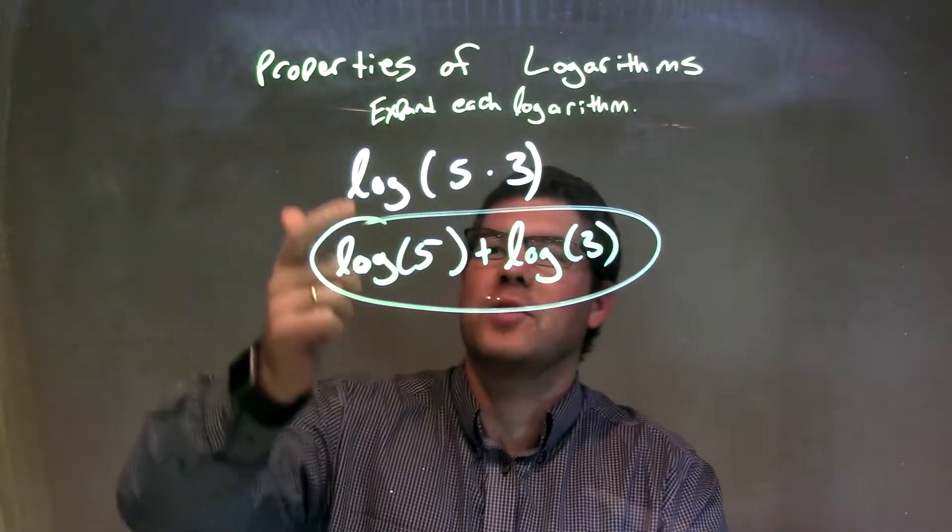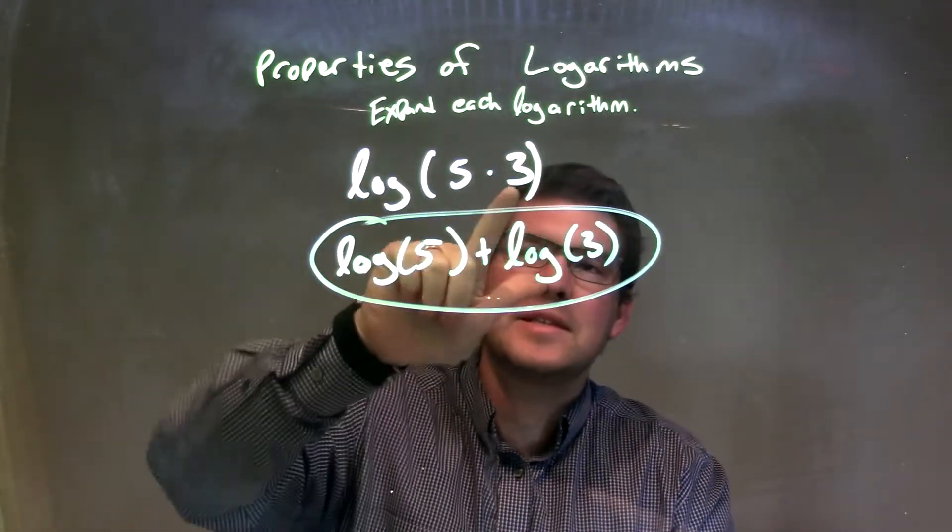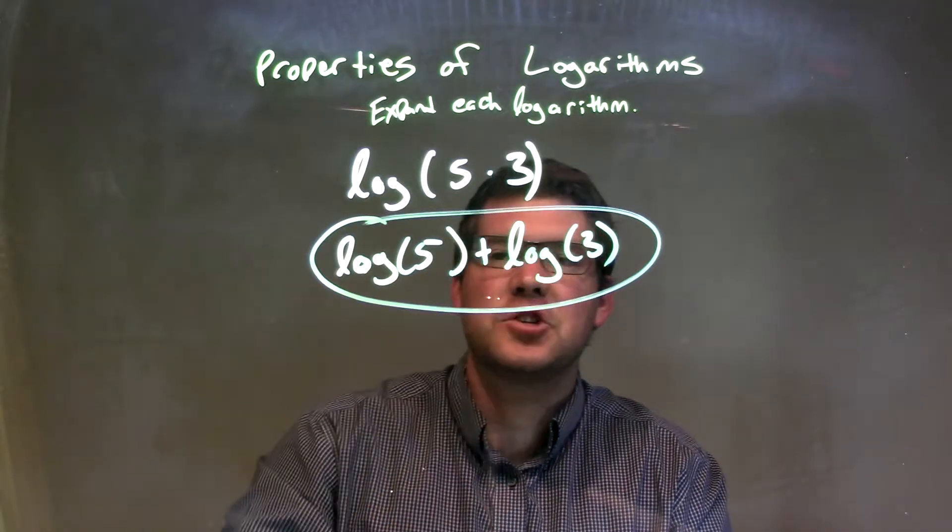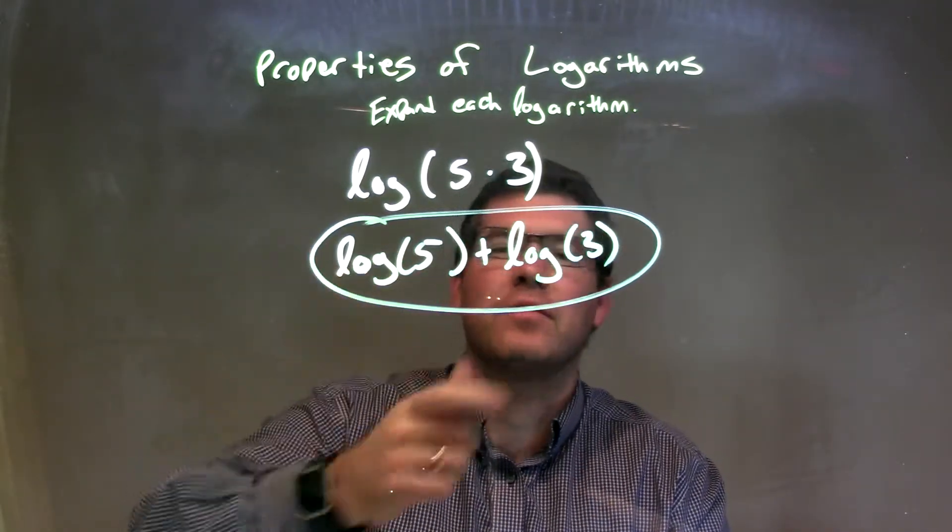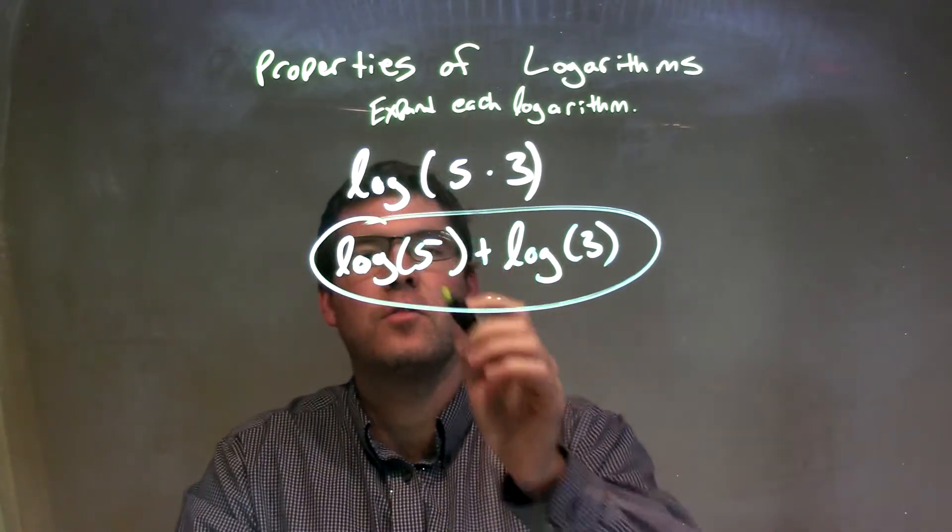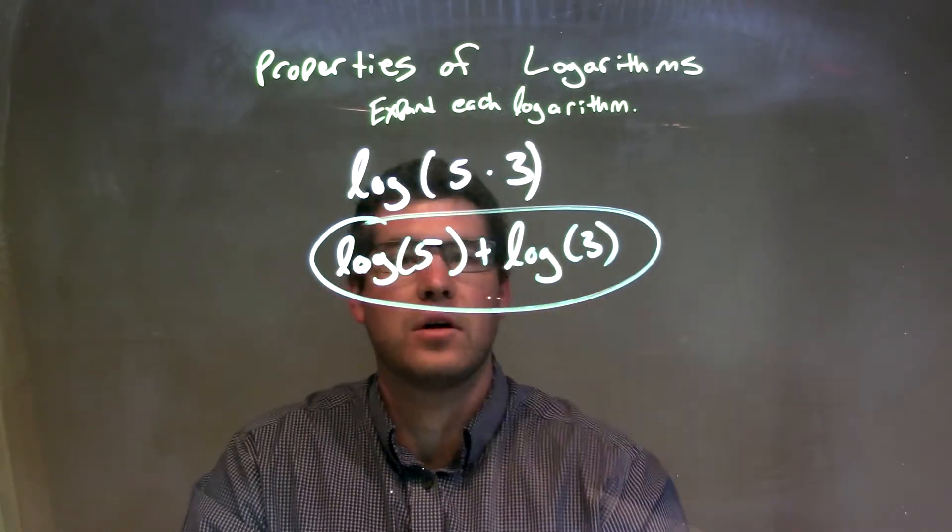So a quick recap here, log of 5 times 3, and we see that multiplication correctly represents when we expand to an addition outside, and we put a log of 5 and a log of 3, again giving us our final answer here, log of 5 plus log of 3.